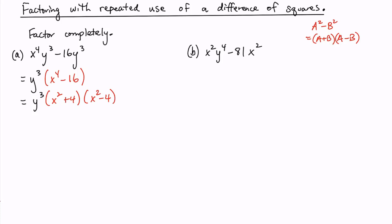The sum of two squares can't be factored anymore. But notice right here, this is also a difference of squares. x squared is a square and 4 is a square. So let's keep factoring. Let's keep it going.